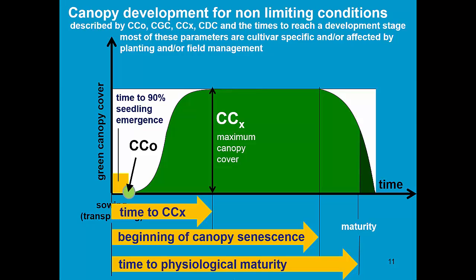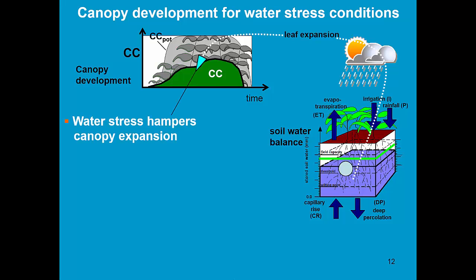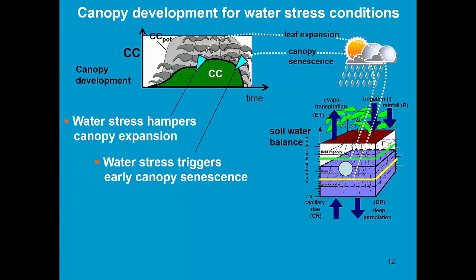The user needs to tune those parameters to the variety and the environment in which the crop is grown. By expressing the time in thermal degree days, the canopy development will adjust to the thermal regime of the season. In the simulation, the canopy development will now be adjusted to water stress conditions. Water stress can hamper the canopy expansion and can even trigger early senescence.